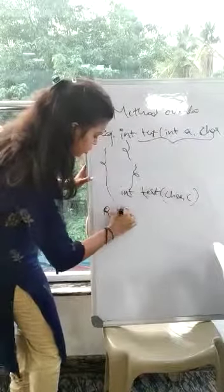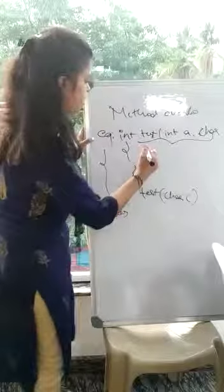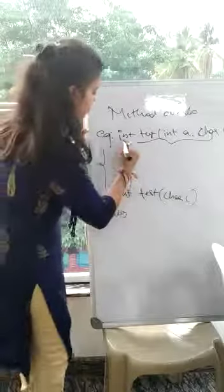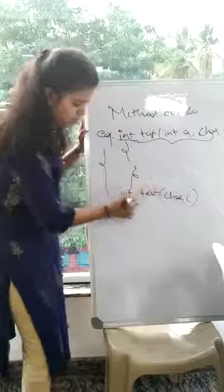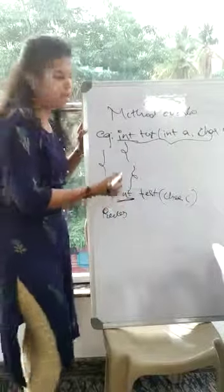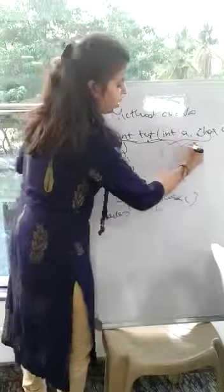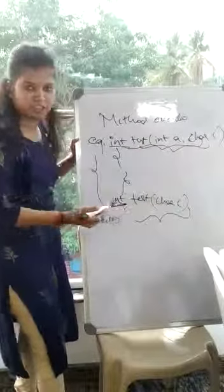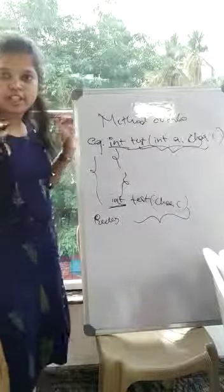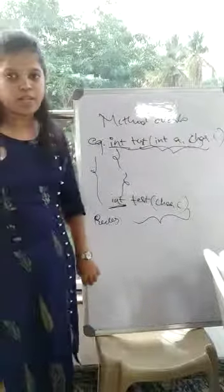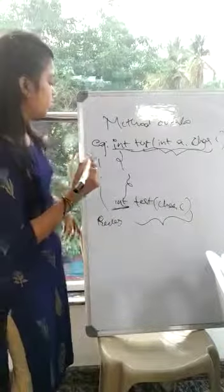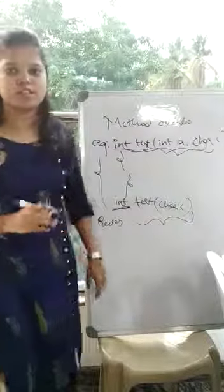In method overloading, the rule is that the method signature must be different — the formal arguments need to be different. Return type does not play any role in method overloading. For example, that method is fine. Thank you.